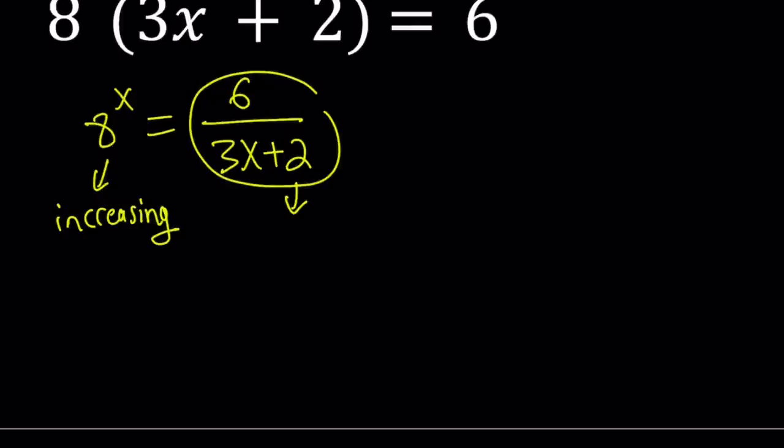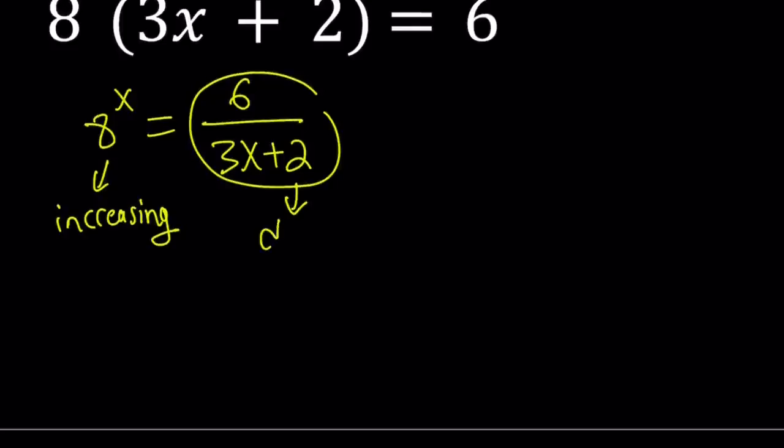As x increases, as x approaches infinity, this approaches 0. We're going to take a look at the limit as well. But this is a decreasing function because the denominator increases. That is a line with a positive slope. As the denominator increases, the whole function decreases.